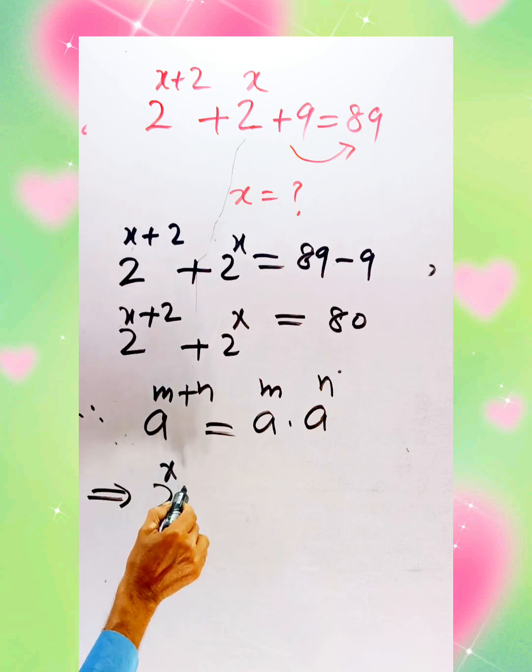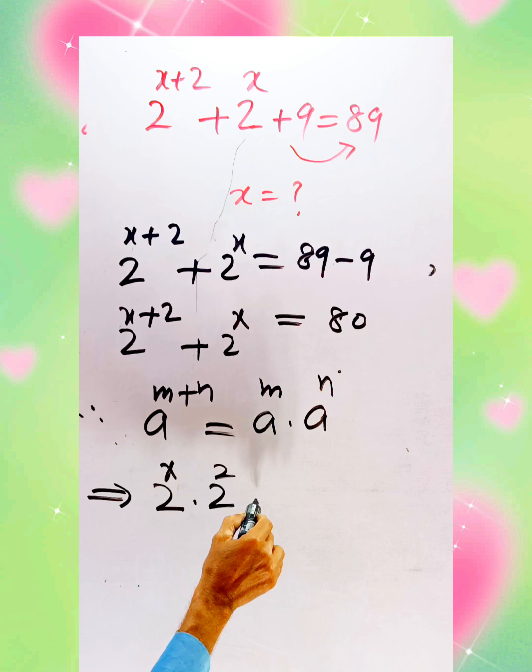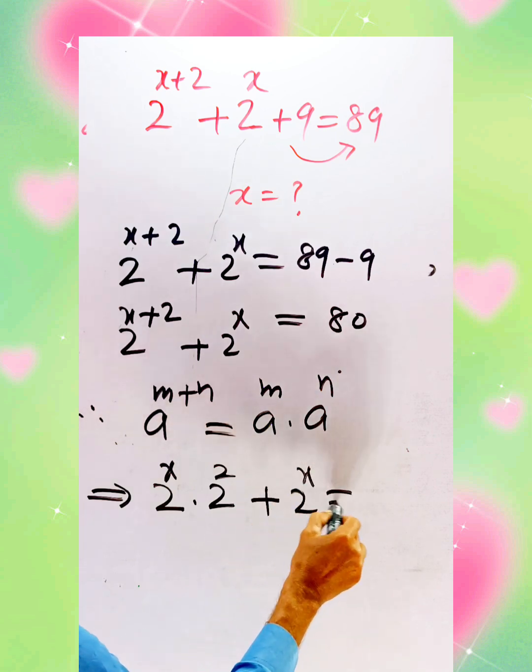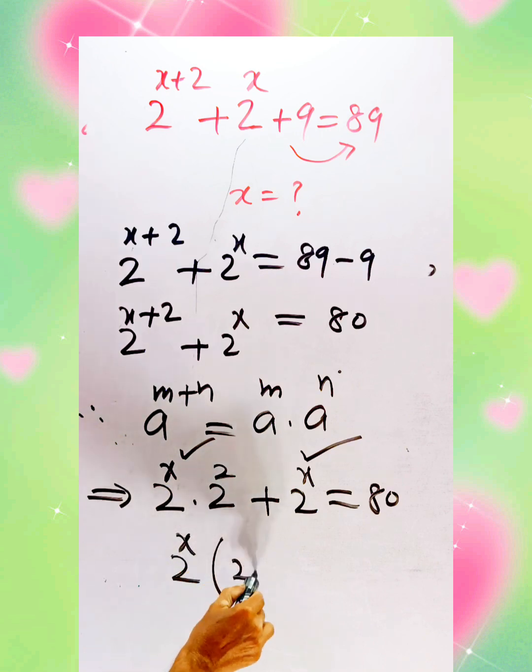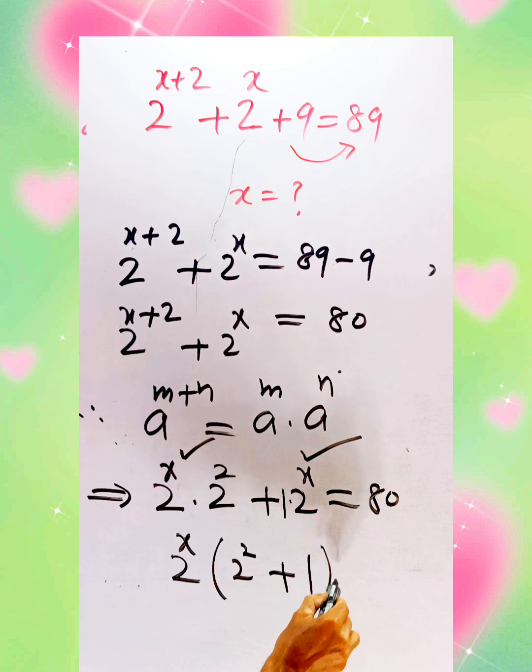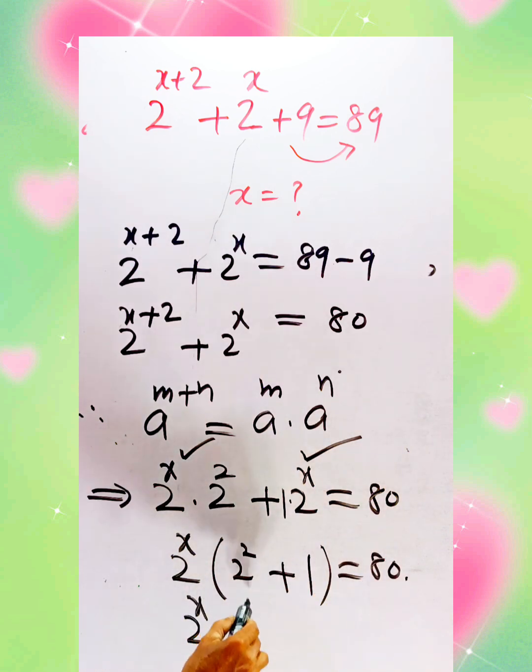2^x · 2^2 + 2^x = 80. Now we take the common term 2^x: 2^x(2^2 + 1) = 80. We get 2^x(4 + 1) = 80, so 2^x · 5 = 80.